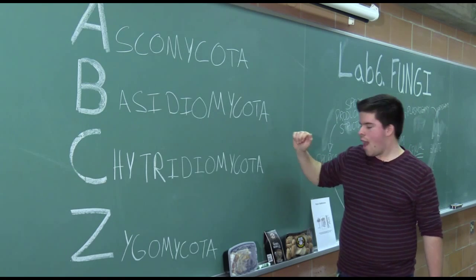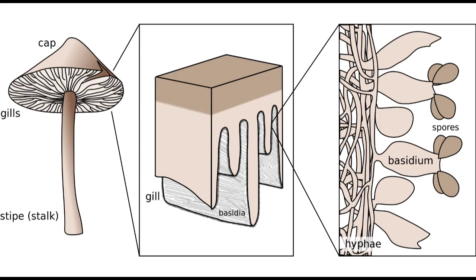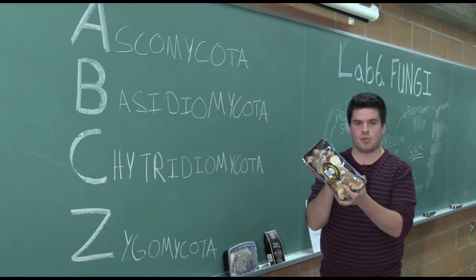Basidiomycota have gills. And these gills are club-shaped. An example of basidiomycota are these mushrooms I bought.